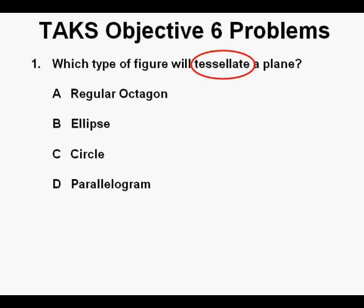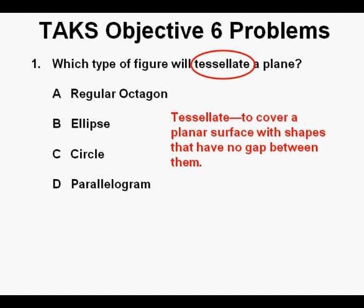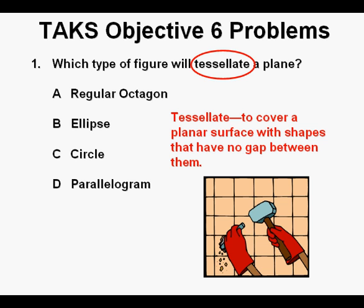First, this word, tessellate. What does it mean? To tessellate a plane means to cover a plane such that there are no gaps between the shapes. An example of tessellation in everyday life would be the tiling of a floor or another plane or surface. Probably the most commonly tessellated shape is a square.